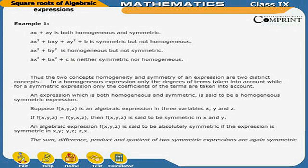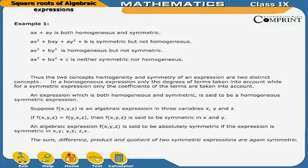Suppose f is an algebraic expression in three variables x, y, and z. If f(x,y,z) = f(y,x,z), then f is said to be symmetric in x and y. An algebraic expression f is said to be absolutely symmetric if the expression is symmetric in x, y, z, and x. The sum, difference, product, and quotient of two symmetric expressions are again symmetric.